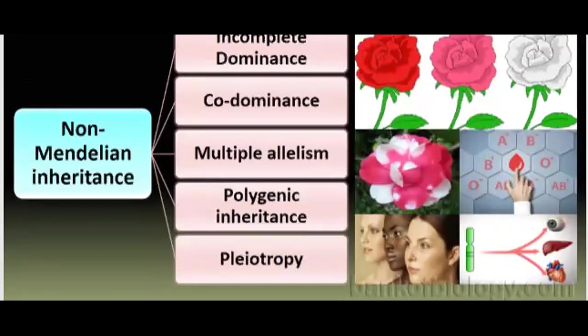Incomplete dominance, co-dominance, multiple allelism, polygenic inheritance, and pleiotropy — these are all cases of non-Mendelian genetics. We have to overcome some deviation from Mendelian genetics and Mendelian inheritance. In all these cases, we say that these genes show non-Mendelian inheritance.